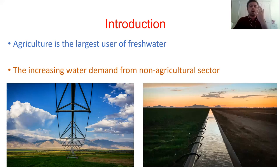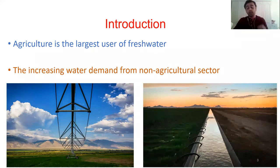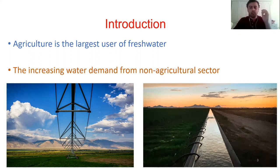In recent decades, governments have started to educate people about the importance of water. The first step is usually focused on daily usage — for example, closing the tap while brushing teeth or reducing shower time. That is true, and I agree with it. But the main problem is agriculture, because agriculture is the largest user of fresh water — about 70% of fresh water is used in agriculture — and the efficiency of that water use is very low. Especially in Turkey, governments have started focusing on improving water use efficiency in agriculture, and to do that, evapotranspiration must be determined as a first step.